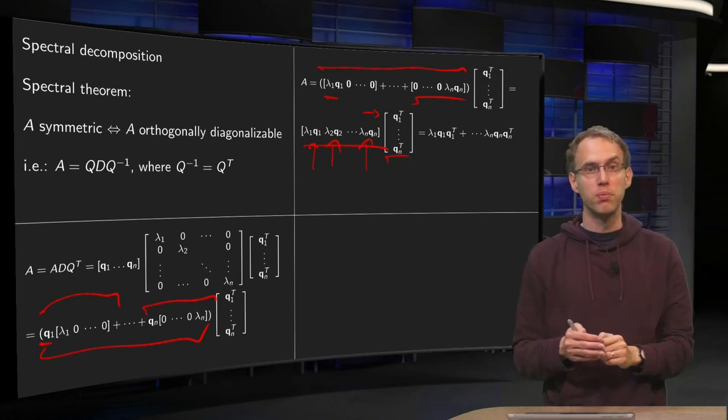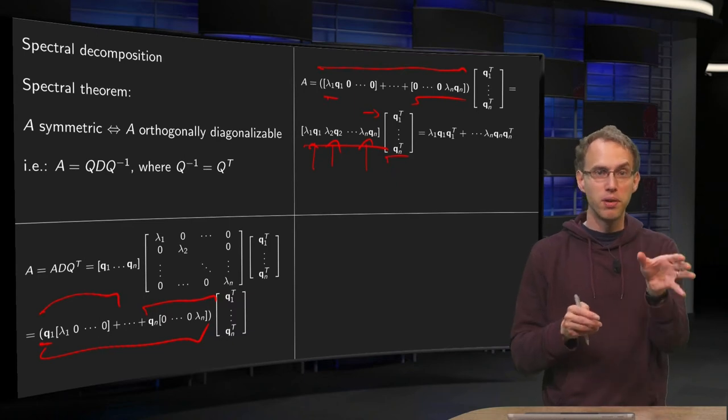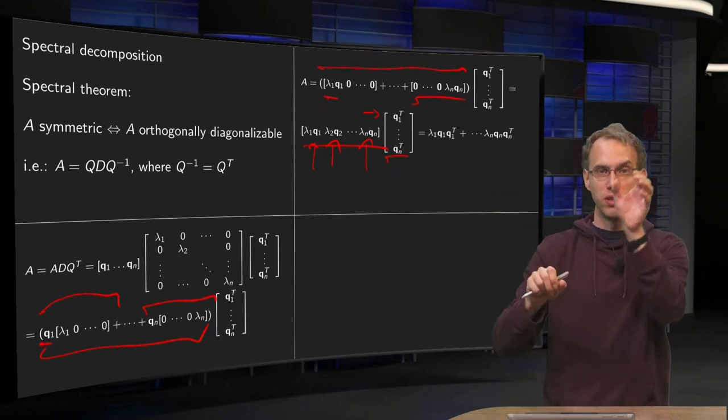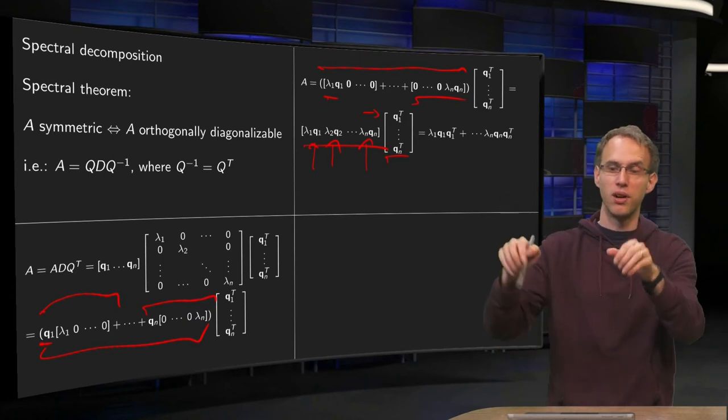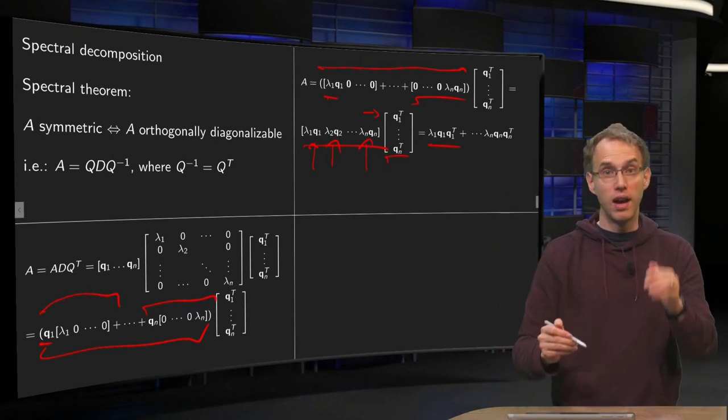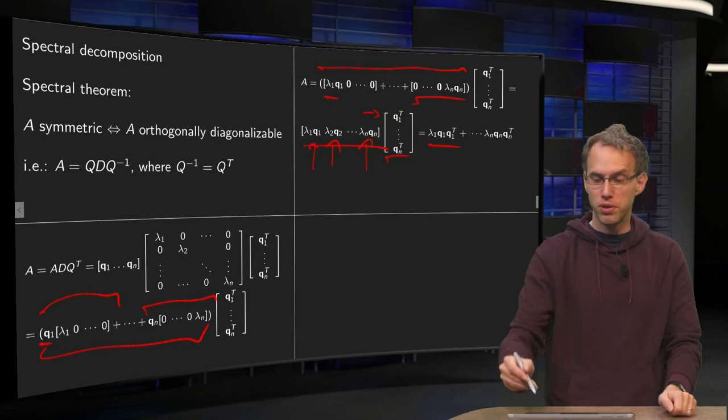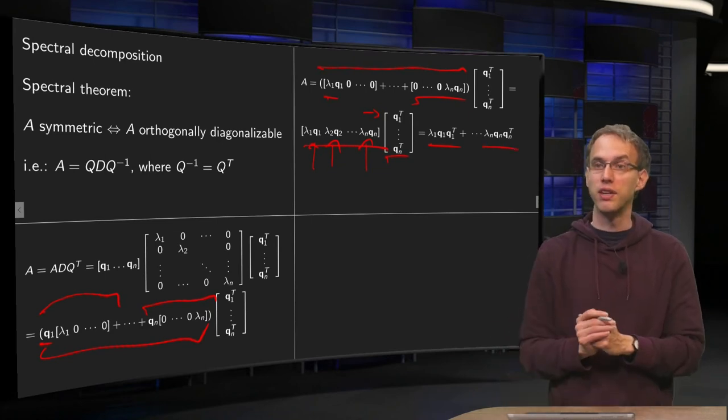Now if we compute that product we get lambda 1 Q1 times Q1 transpose plus second column times second row, so lambda 2 Q2 times Q2 transpose and so on until lambda n Qn times Qn transpose. So we have now rewritten A as a sum of matrices.